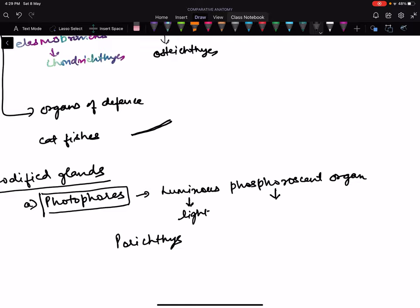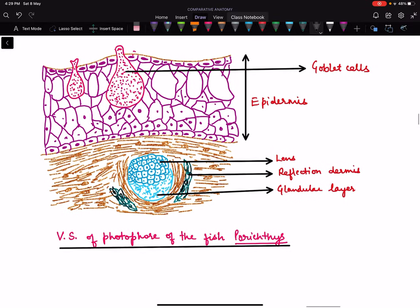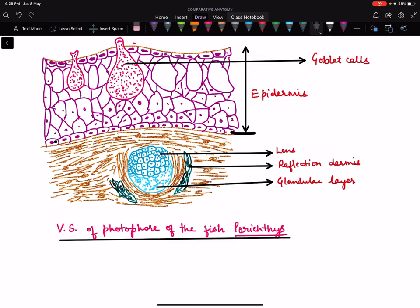These photophores are usually found in a fish called Porichthys. This layer is the stratum germinativum in the deep dermis, this is the epidermis. This whole structure is the photophore. How is this photophore modified? The upper part is known as the lens.